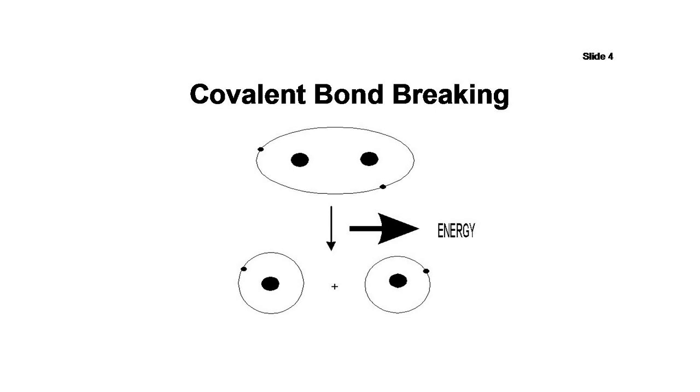If a covalent bond is broken, the now unpaired electrons don't have to be as far away from the nucleus as they were when they were paired with another electron in the bond. Therefore, they need less energy, and this excess energy can be released.